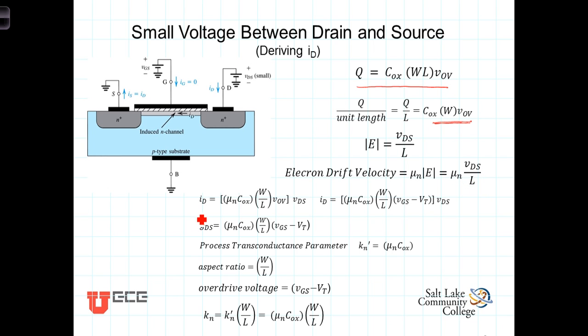And by rearranging, we've got this expression for the current traveling in the channel. Rearranging the terms, we have the mobility of the electrons times the capacitance of the oxide layer times what we're going to call the aspect ratio, or W over L, times the overdrive voltage. And this is multiplied by the drain voltage VDS.